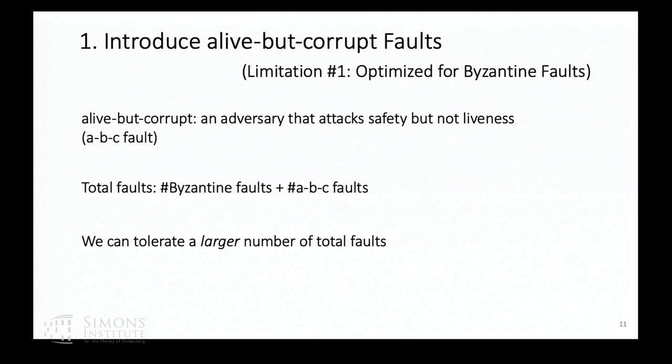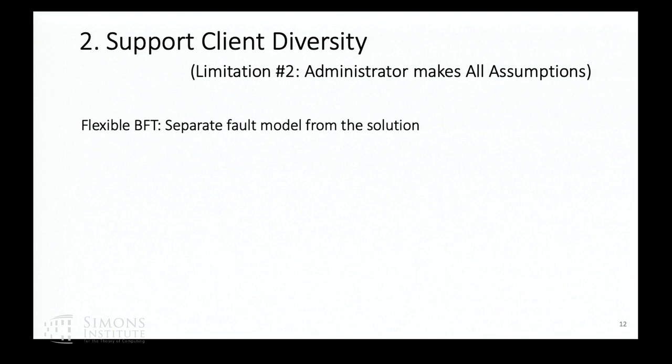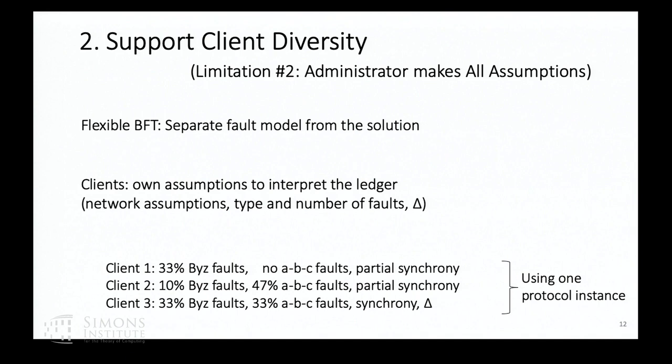Second, we support client diversity. Instead of the administrator making all assumptions, in Flexible BFT we separate the fault model from the actual solution. We have one ledger, and every client can make its own assumption and decide how to interpret the ledger. For example, the client can decide whether it wants to live in a synchronous or partially synchronous world, and what the type and number of faults are. So you can have a client tolerating 33% Byzantine faults and no ABC faults in a partial synchrony world simultaneously coexisting with a client tolerating 33% Byzantine faults, 33% ABC faults, in a synchronous world.